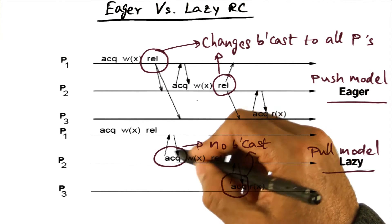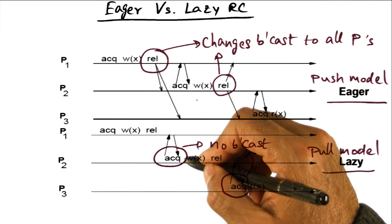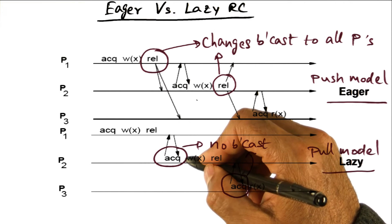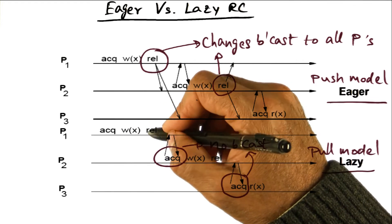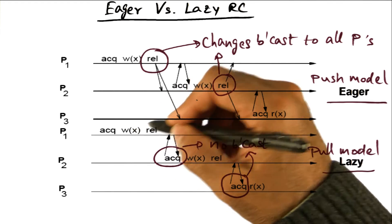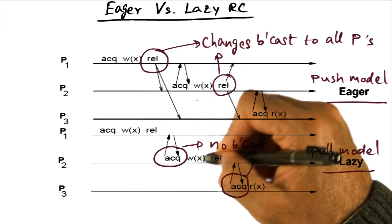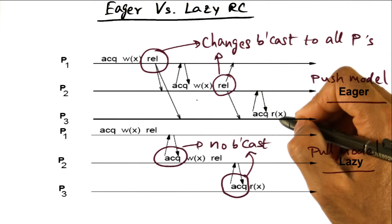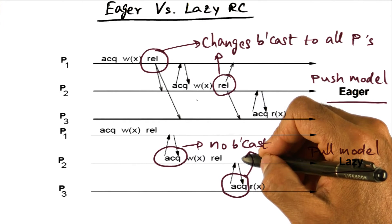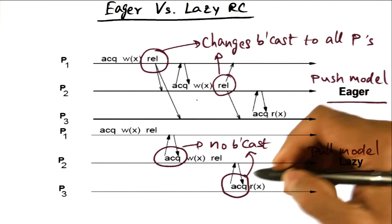I have to go and make sure that I complete all the coherence actions that are associated with that particular lock. In this case, the previous lock holder had made changes to the variable x. So I'm going to pull it from this guy, and then I can execute my critical section. And then when P3 executes its critical section, it's going to pull it from P2 and complete what it needs to do.